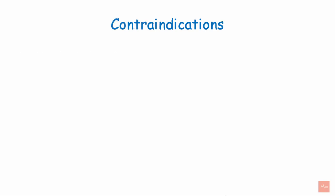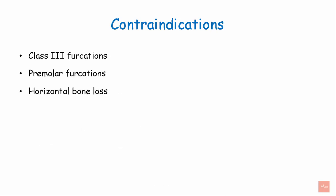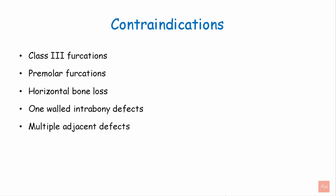Conditions where GTR cannot be used include: class 3 furcations, premolar furcations placed too apically, horizontal bone loss, one wall infra-bony defects — though certain studies using non-resorbable membranes have given limited results — multiple adjacent defects, and inadequate width of attached gingiva.